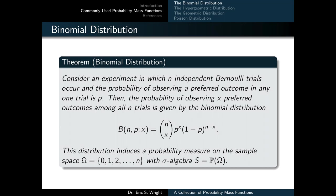Now we'll introduce the first widely used probability mass function — one of the two based upon Bernoulli trials — and that's the binomial distribution. If we consider an experiment in which n Bernoulli trials occur and the probability of observing a preferred outcome in any one trial is p, then the probability of observing x preferred outcomes among all n trials is given by the binomial distribution.